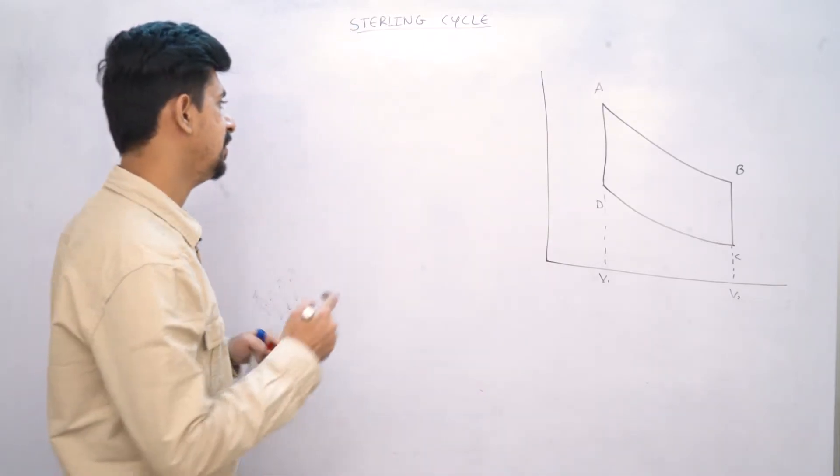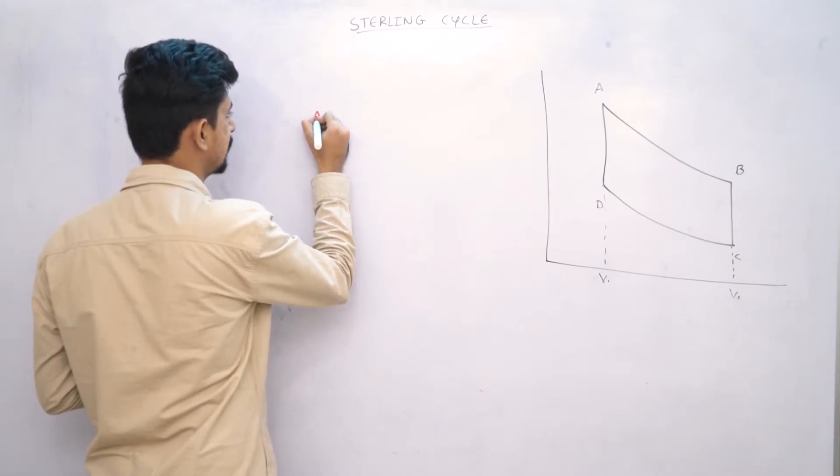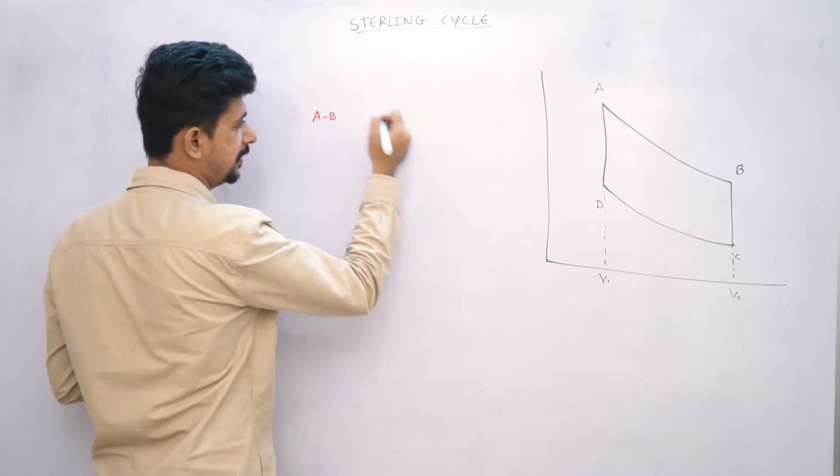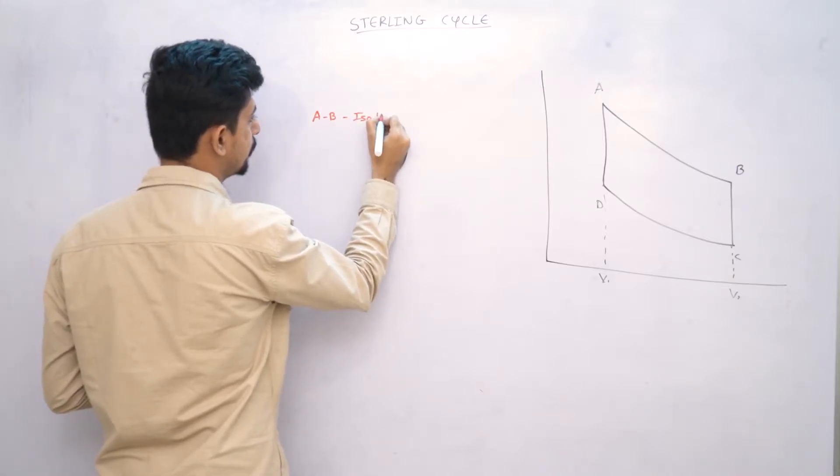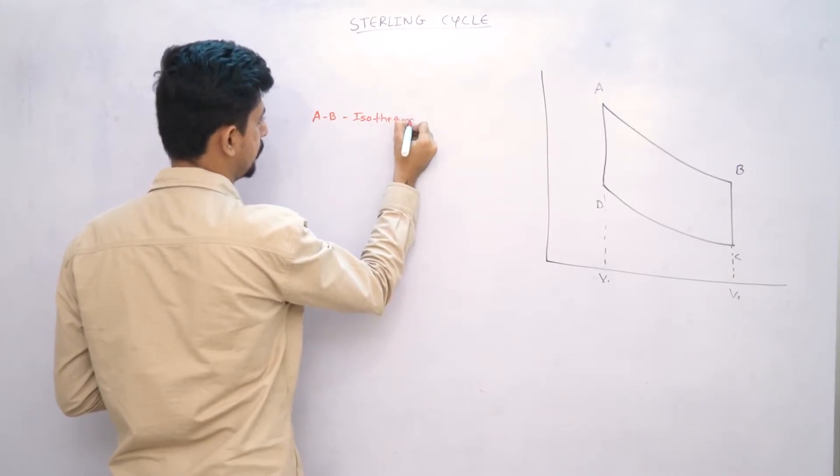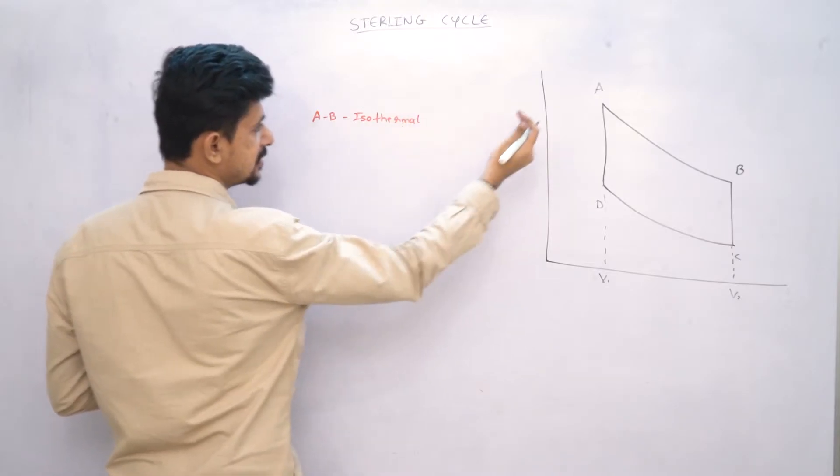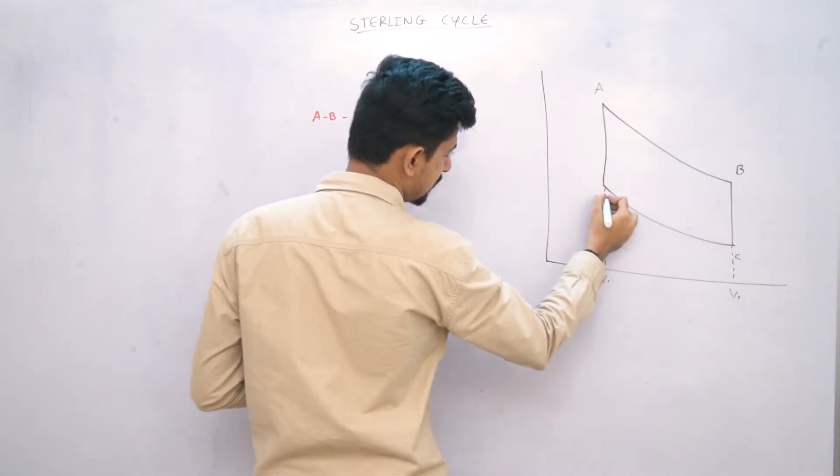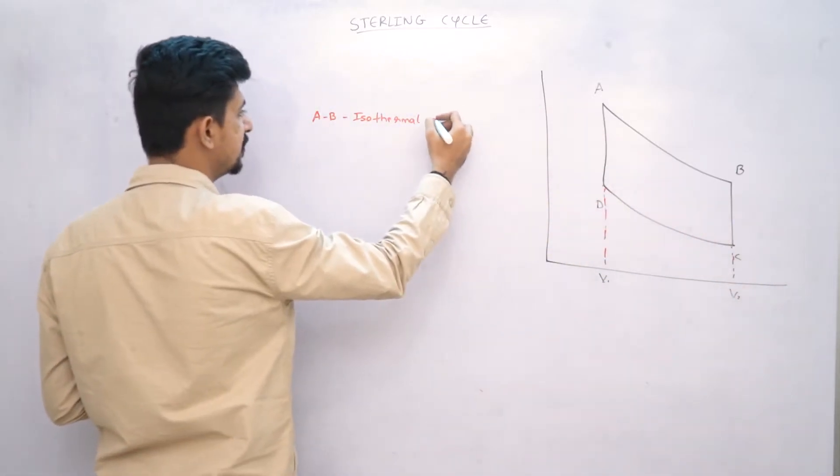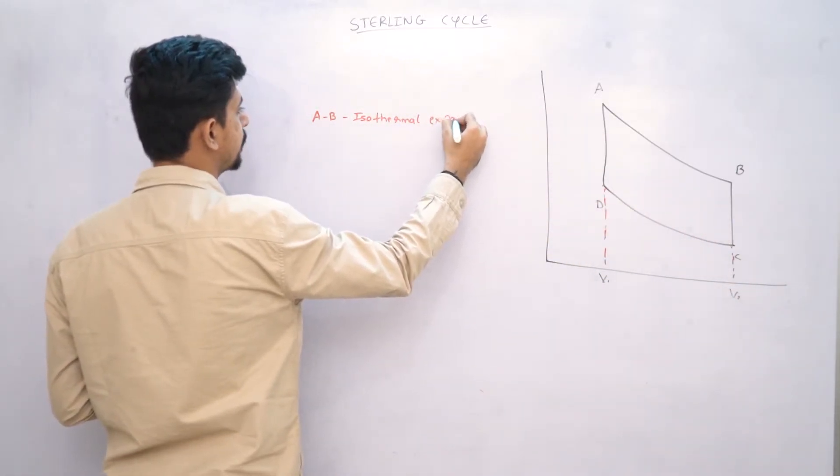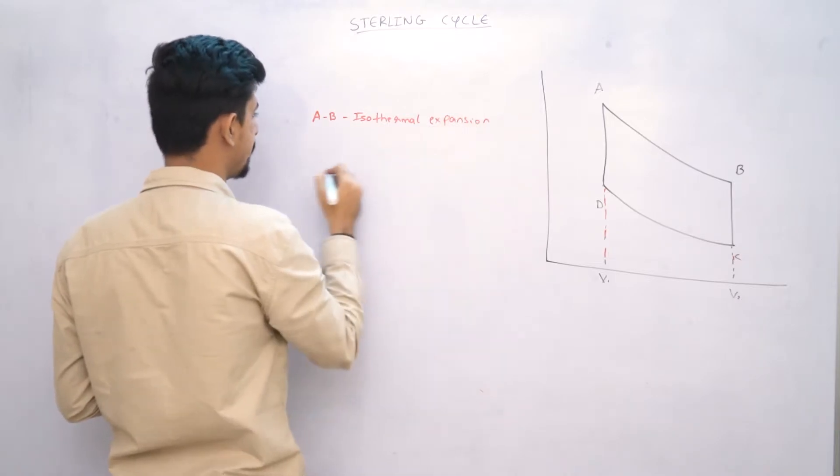Let's start. Step one will be from A to B. This will be an isothermal process. And as you can clearly see, volume is changing from A to B. This is the respective volume at A, this is the respective volume at B. So obviously volume is increasing, so this will be an isothermal expansion.